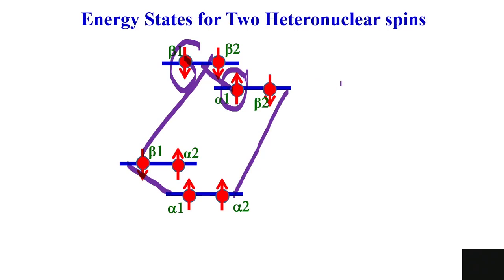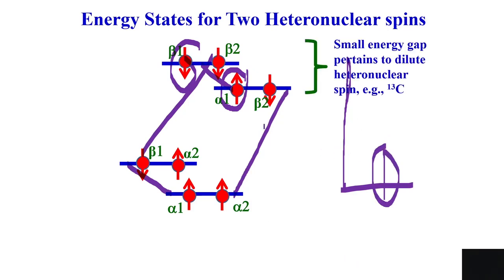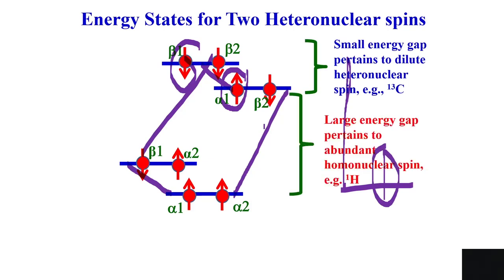So these two transitions correspond to carbon, and these two correspond to proton transitions. The proton energy separation is larger, giving larger intensity — four times more than that of carbon. This is the heteronuclear energy state diagram: the small energy separation is for the heteronuclear dilute spin with less gamma (carbon), and the large gap is for the proton with abundant and higher gamma.